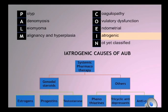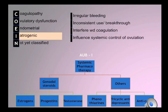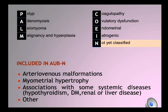Iatrogenic causes of AUB include the use of systemic pharmacotherapy like gonadal steroids, especially estrogens, progesterone, or testosterone, and other drugs such as antidepressants. These would cause irregular bleeding, breakthrough bleeding due to inconsistent use, interference with coagulation, and influence on systemic control of ovulation. The last category — not yet classified — includes AV malformations and myometrial hypertrophy, which cause heavy menstrual bleeding.